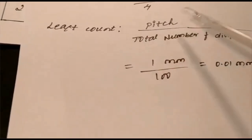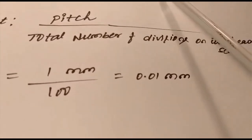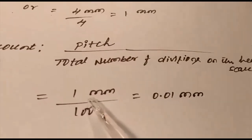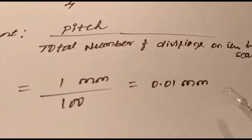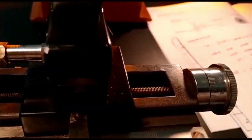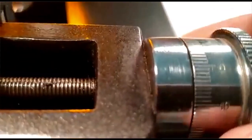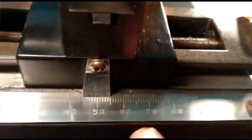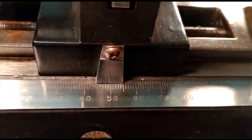Next, calculate the least count. The formula is: LC = pitch divided by total number of divisions on the head scale. The pitch is 1 and the total number of divisions on the head scale is 100, so 1 divided by 100 gives 0.01 mm. This is the pitch scale and this is the head scale on the Traveling Microscope.